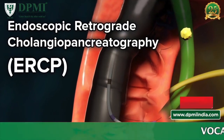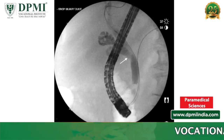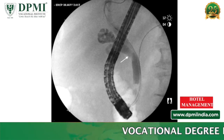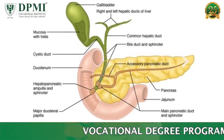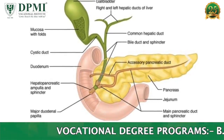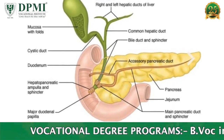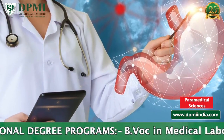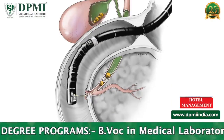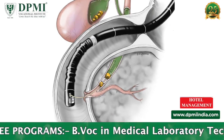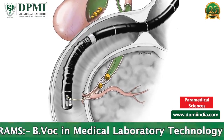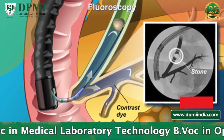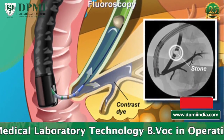Endoscopic Retrograde Cholangiopancreatography (ERCP) is a diagnostic and interventional procedure technique using both endoscopy and fluoroscopy for examination and intervention of the biliary tree and pancreatic ducts. It is typically performed by doctors with endoscopic qualifications, for example a gastroenterologist, rather than a radiologist. It involves passing an endoscope to the descending duodenum and subsequently cannulating the ampulla of Vater, after which contrast can be injected outlining the biliary tree and various procedures can be performed.